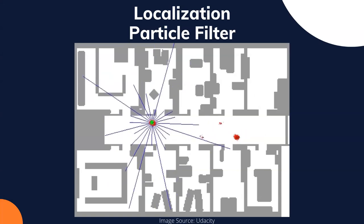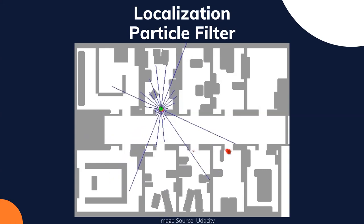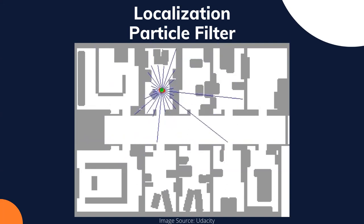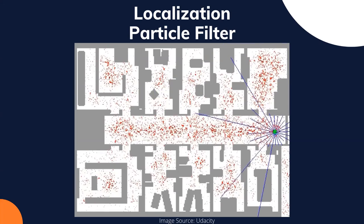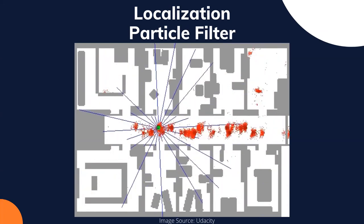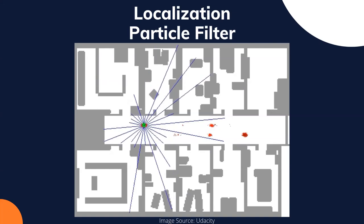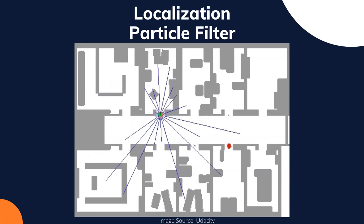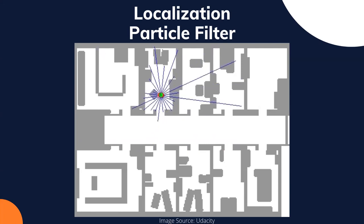A very popular localization algorithm is the particle filter, where you start at some point and spread your confidence all across the map as separate points — samples with equal weights at the start, uniformly. As you move and observe, you change the importance weight of each point based on what you observe. Some points not consistent with your observation get decreased weights while more consistent ones get increased weights. Here you'll see two point cloud blobs forming because two rooms look very similar, but once it encounters a distinguishing part it breaks the symmetry and achieves high confidence.